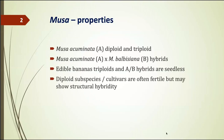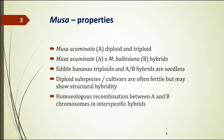The diploid subspecies cultivars are often fertile but may show structural hybridity. Structural hybridity is an old term for heterozygosity for one or few structural rearrangements. What is also possible is that between the chromosomes of the A and B genomes in specific hybrids, there can be homeologous recombination. That makes the whole pan genome story even more complicated.